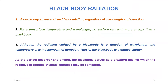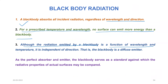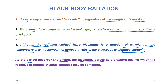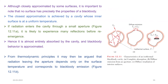Now let us revise black body radiation. A black body absorbs all incident radiation regardless of wavelength and direction. For a prescribed temperature and wavelength, no surface can emit more energy than a black body. Although the radiation emitted by a black body is a function of wavelength and temperature, it is independent of direction — a black body is a diffuse emitter, emitting energy at equal rates in all directions. As a perfect absorber and emitter, the black body serves as a standard against which the radiative properties of actual surfaces may be compared. No surface has precisely the properties of a black body.